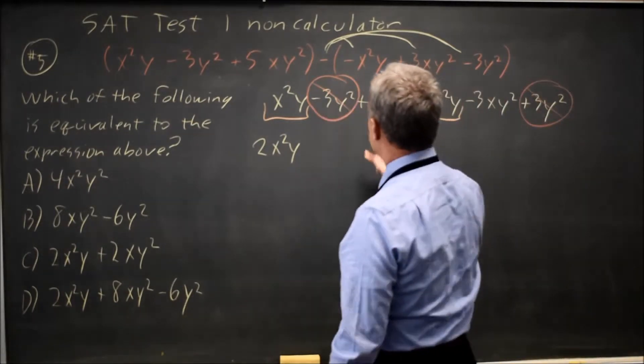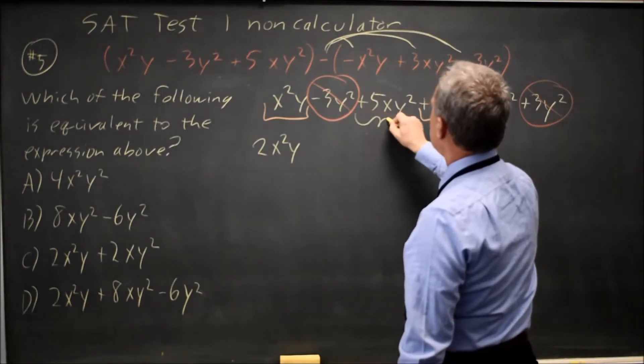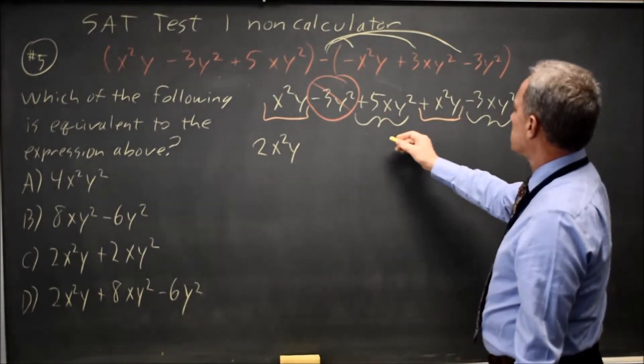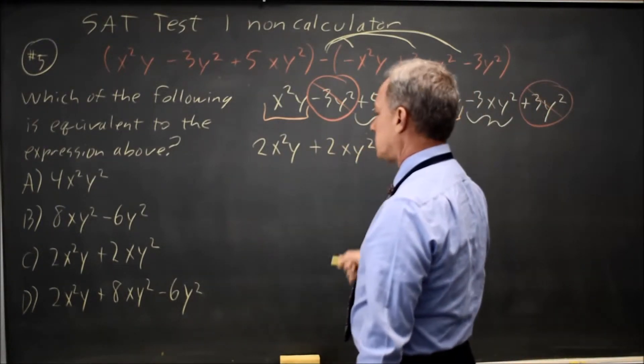Those cancel, giving me 0. And then I have 5xy squared minus 3xy squared, which is 5 minus 3, giving positive 2xy squared.